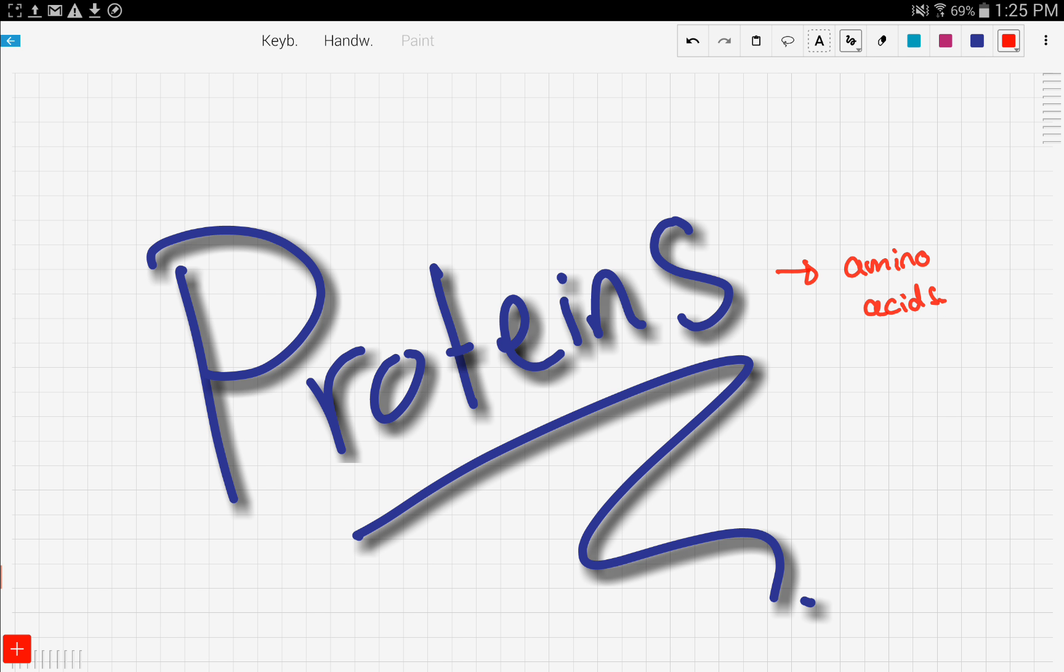To make proteins, we add different types of amino acids together in order to form our protein polymer. Let's see how that is done.